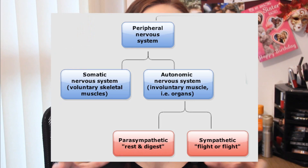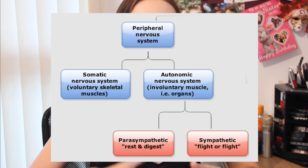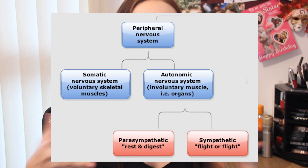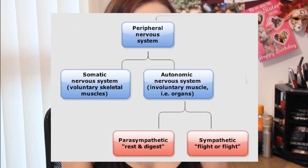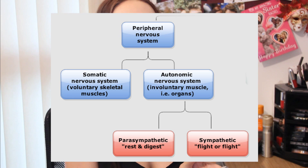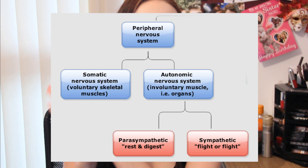Every time I do this with my hands, that's the somatic nervous system because I'm controlling it myself. The second part is the autonomic nervous system, which controls involuntary actions which we have no conscious control over. And this is also split into two parts: the sympathetic nervous system and the parasympathetic nervous system.